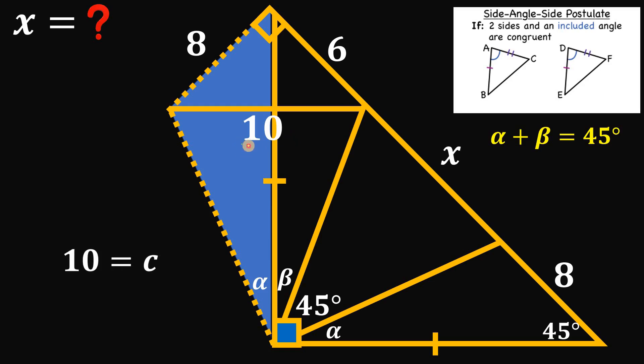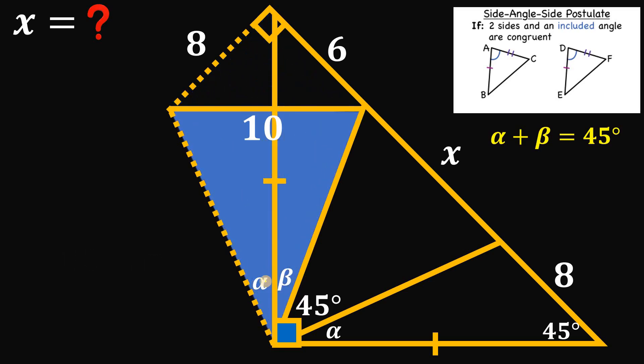The hypotenuse is 10. Now let's focus on this triangle here. We know this angle is alpha plus beta. Since alpha plus beta equals 45 degrees from earlier, we can replace this angle with 45 degrees. Also note that these two segments are congruent.